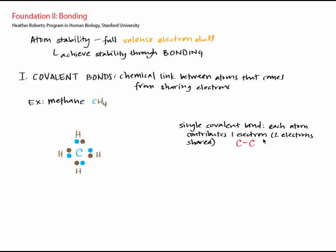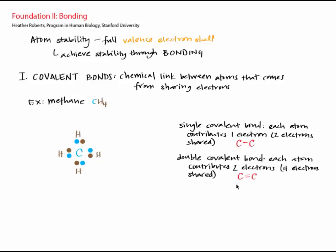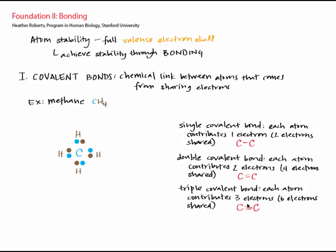A line between two atoms indicates a single covalent bond. If each atom contributes two electrons so that four electrons are shared between the atoms, that's a double covalent bond. And if each atom contributes three electrons so that six electrons total are shared, that's a triple covalent bond. For the same two atoms involved, as the number of shared electrons increases, bond strength increases as well. So triple bonds are stronger than single bonds.